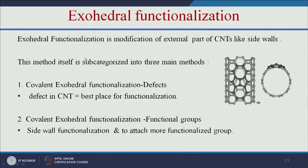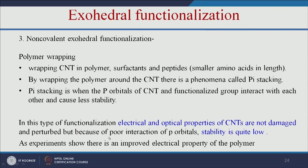Exohedral functionalization is sub-categorized into three main methods. The first is covalent exohedral functionalization based on defects — when carbon nanotubes are made, there will be defects, and these defect sites are the best places for functionalization. The second is covalent exohedral functionalization of the side walls, where functional groups are added to the side walls of the carbon nanotubes. The third is non-covalent exohedral functionalization, where a polymer or surfactant wraps around the CNT through a phenomenon called pi-stacking, where p orbitals of CNT and the functional group interact with each other. In this type, the electrical and optical properties of CNTs are not damaged, but stability is quite low.